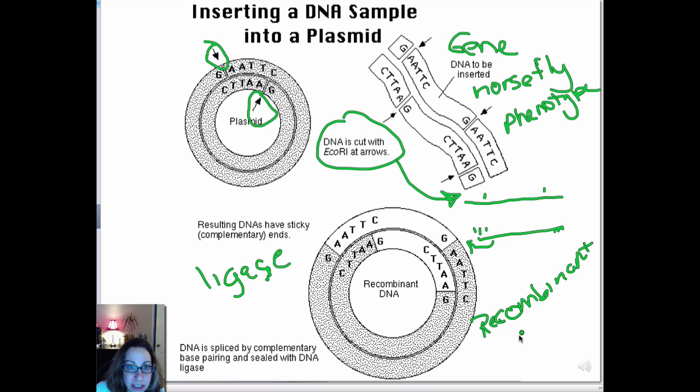And end up with recombinant DNA with plasmid DNA mixed with a gene from a horsefly that you can then study. Now we're going to continue by talking about how you are going to then use this recombinant DNA and clone it, make many copies of it.